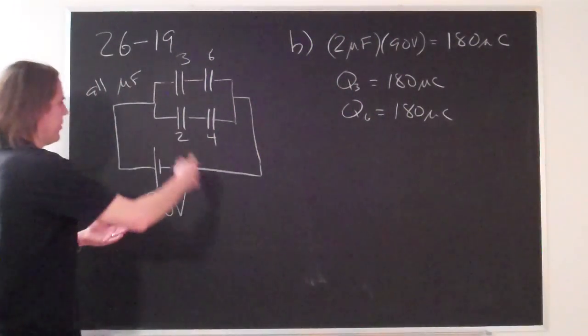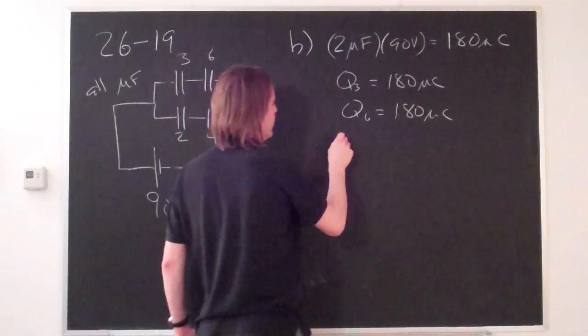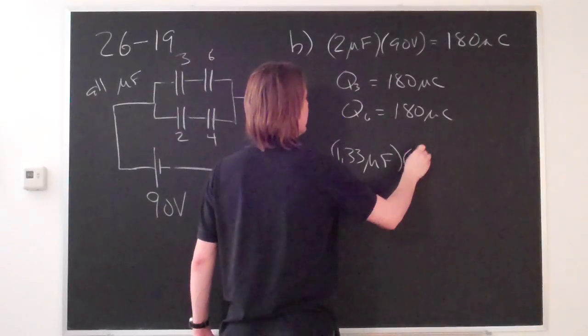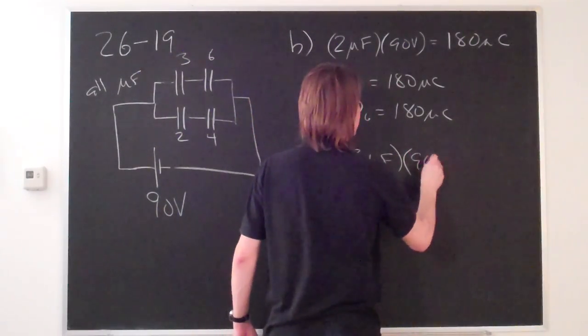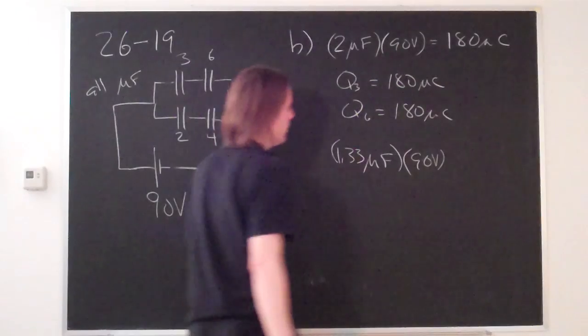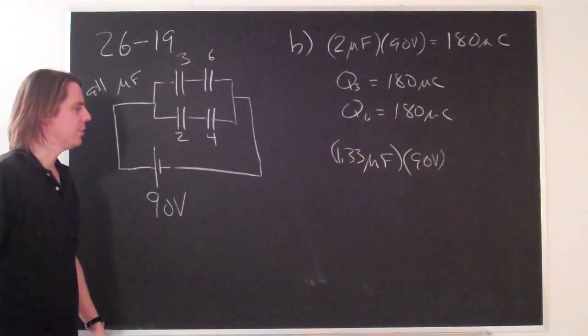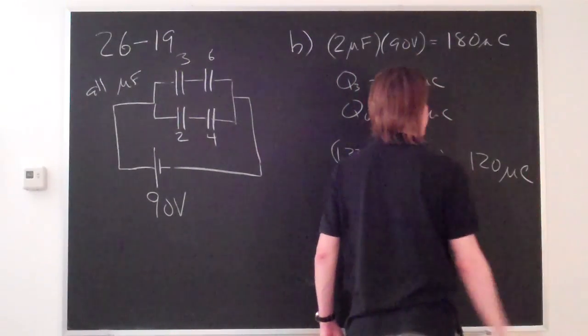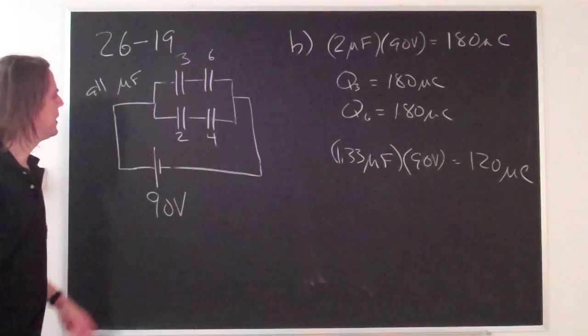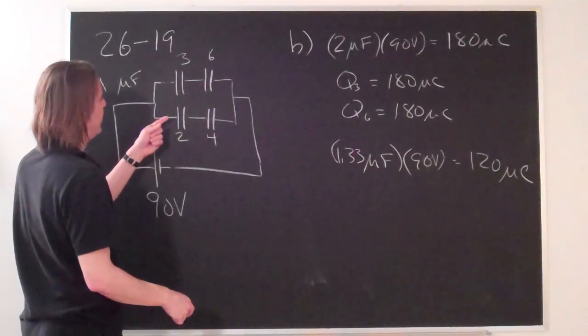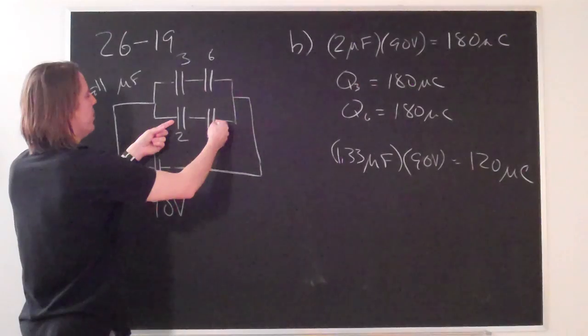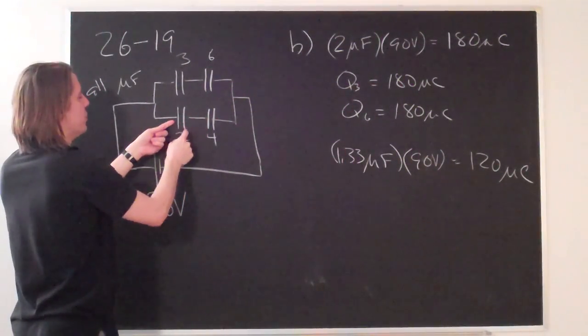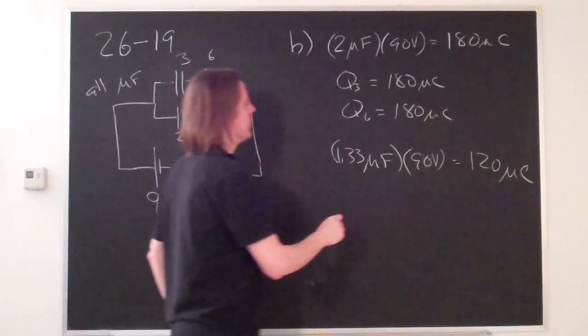Now if we do the exact same thing with this one, we say this one was 1.33 microfarads times 90 volts, that's 120 microcoulombs. If 120 microcoulombs builds up here, then you get minus 120 here, and the middle part that's neutral then separates to give you minus 120 here and plus 120 there. So each of these two gets 120 microcoulombs.